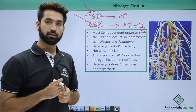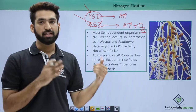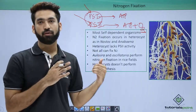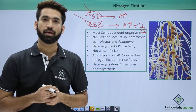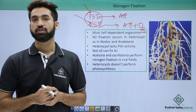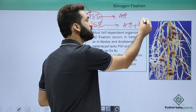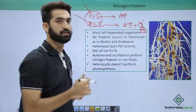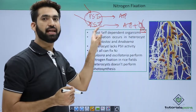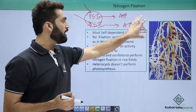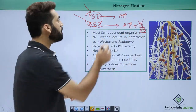For the conversion of N2 to NH3, there is an enzyme required called nitrogenase. Nitrogenase cannot function in the presence of oxygen. So this vegetative cell form has to change into some other form where oxygen availability will not be there.